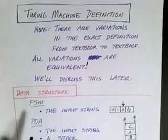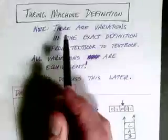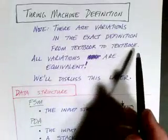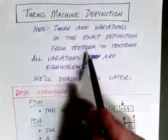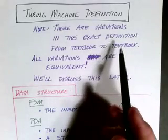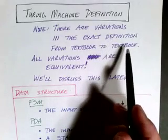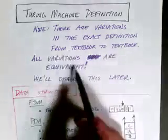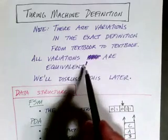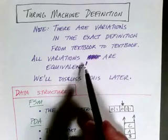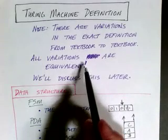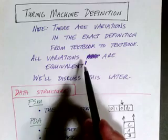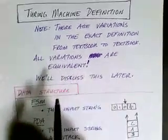Before I describe how Turing machines work, I want to note that there are a number of variations about exactly how Turing machines work. If you look at one textbook or are familiar with one particular definition, it might not be exactly what I'm going to describe here. But interestingly, all the variations turn out to be equivalent — whether the Turing machine I describe is exactly the same as ones you've seen elsewhere, they all have the same equivalent power.